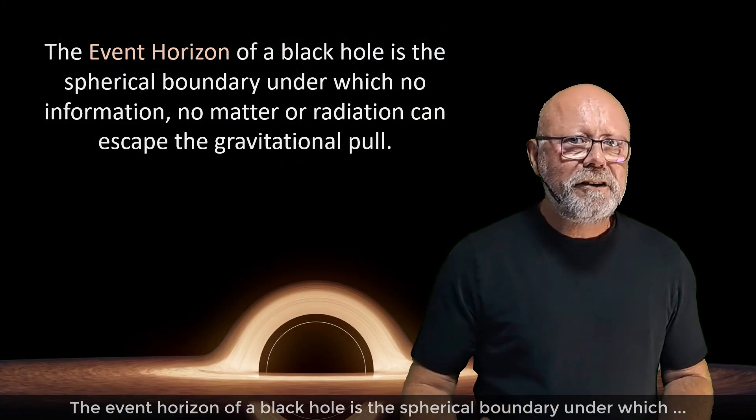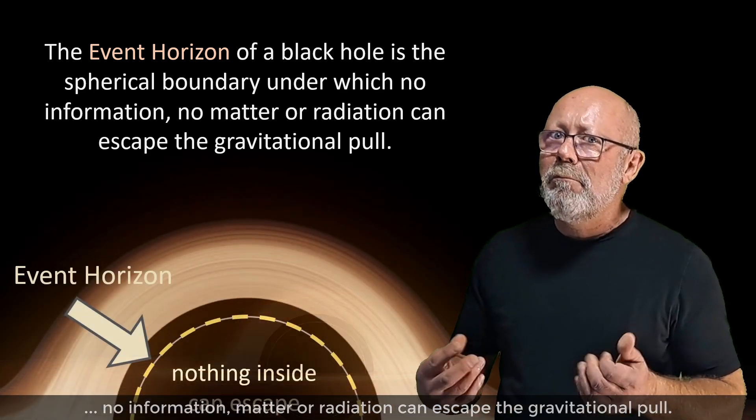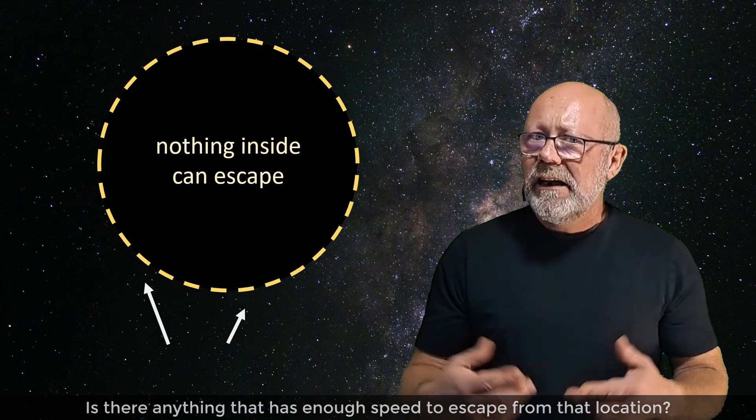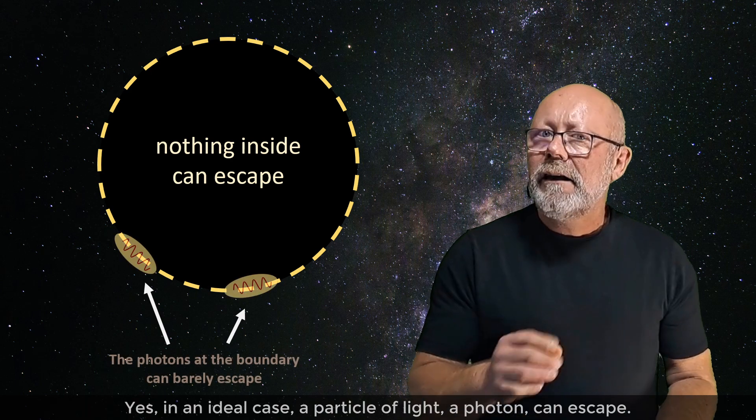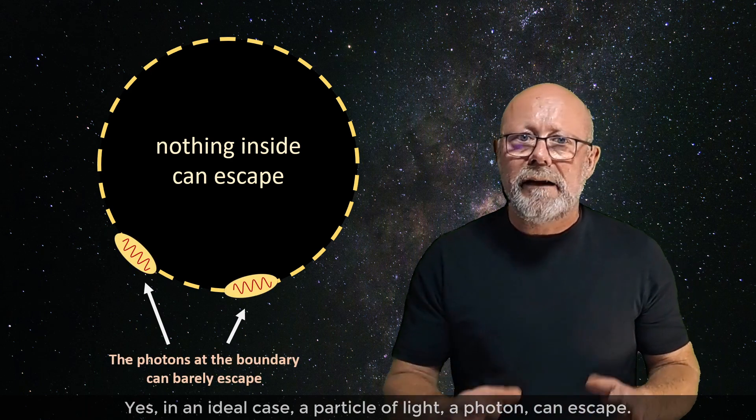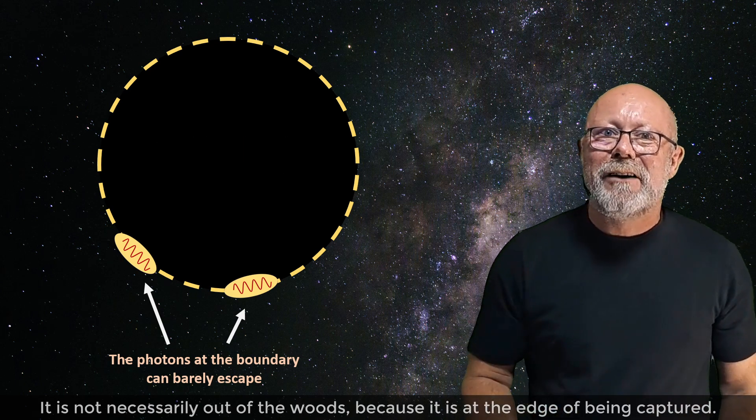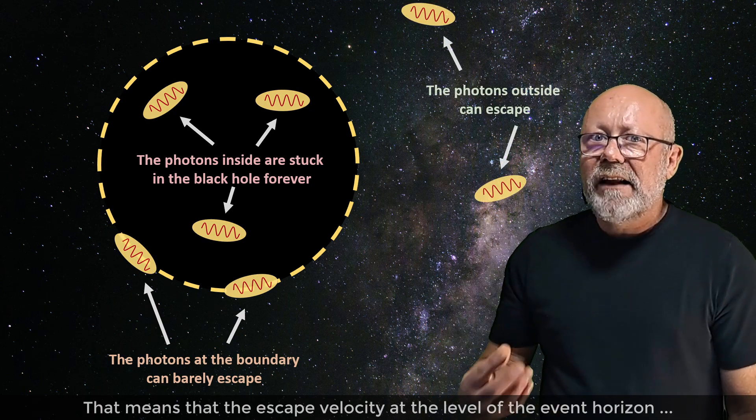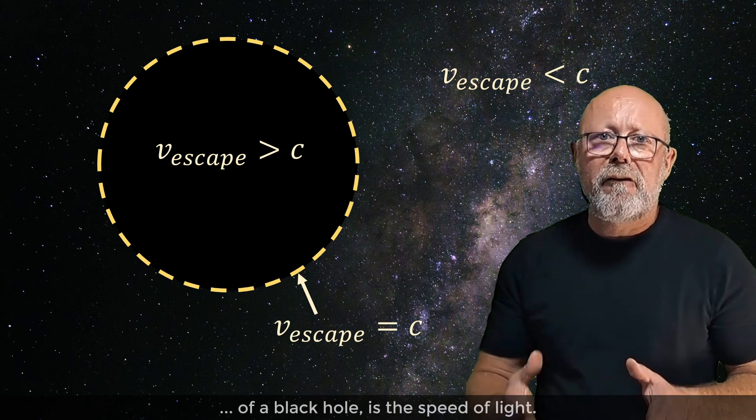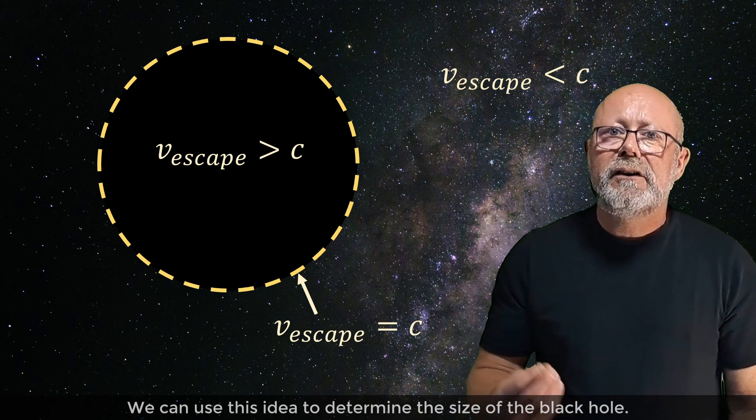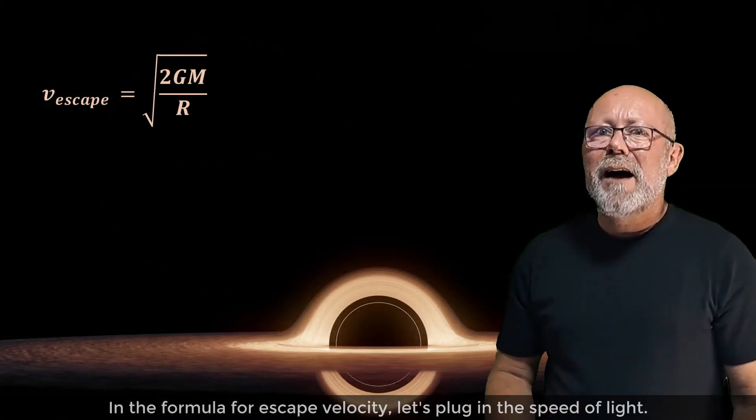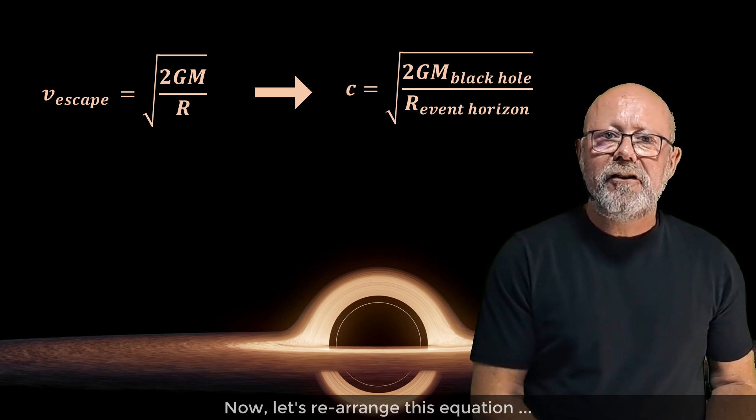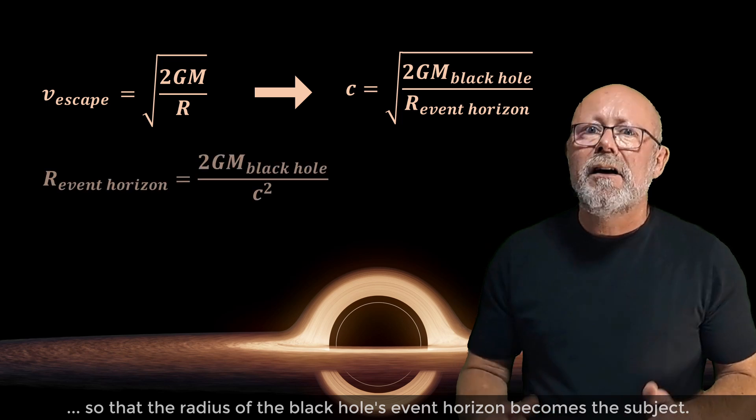The event horizon of a black hole is the spherical boundary under which no information, matter or radiation can escape the gravitational pull. Let's position ourselves exactly on that surface. Is there anything that has enough speed to escape from that location? Yes. In an ideal case, a particle of light, a photon, can escape. It is not necessarily out of the woods, because it is at the edge of being captured. But if it takes the right narrow path, it can escape. That means that the escape velocity at the level of the event horizon of a black hole is the speed of light. We can use this idea to determine the size of the black hole. So in the formula for escape velocity, let's plug in the speed of light. We replace v by c. Now, let's rearrange this equation so that the radius of the black hole's event horizon becomes the subject.